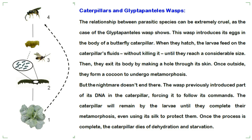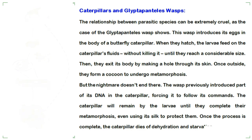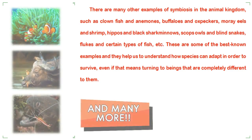The relationship between parasitic species can be extremely cruel, as the case of the glyptapanteles wasp shows. This wasp introduces its eggs into the body of a butterfly caterpillar. When they hatch, the larvae feed on the caterpillar's fluids without killing it, until they reach a considerable size. They then exit its body by making a hole through its skin and form a cocoon to undergo metamorphosis. But the nightmare doesn't end there — the wasp previously introduced part of its DNA into the caterpillar, forcing it to follow commands. The caterpillar remains by the larvae until they complete metamorphosis, even using its silk to protect them. Once the process is complete, the caterpillar dies of dehydration and starvation.